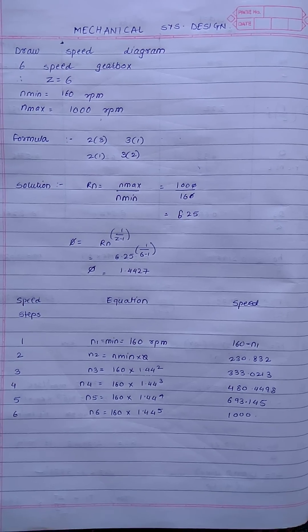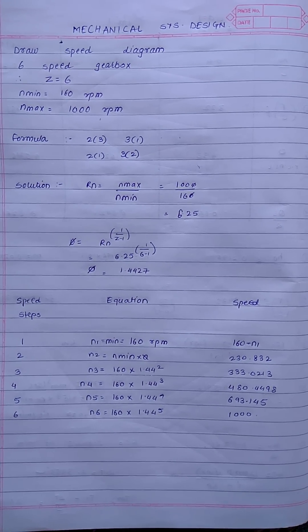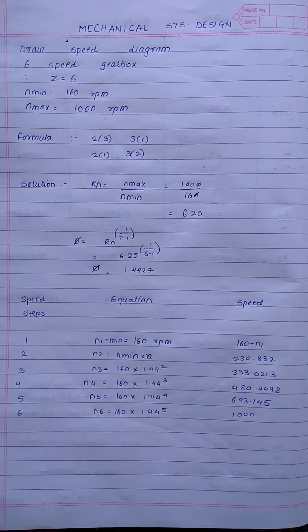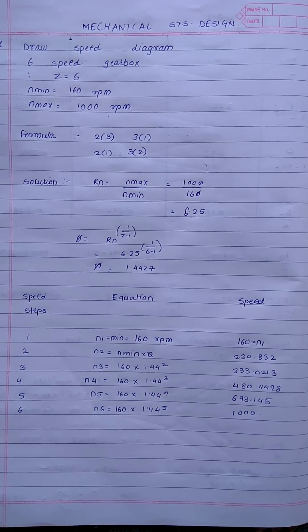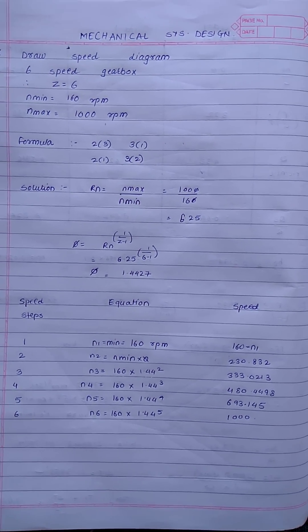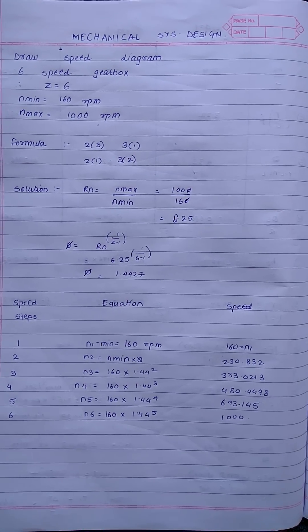Next step we will be calculating the various speed steps for the gearbox: n1, n2, n3, n4, n5, n6. Now n1 is the minimum speed of the gearbox which is given, and n6 should always be equal to or equivalent after calculation to n max.